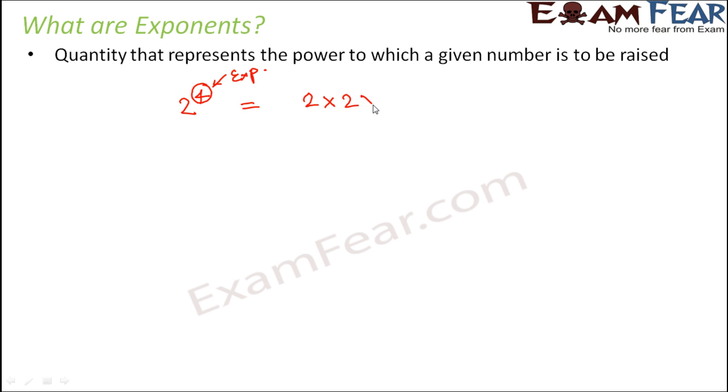How many times we are going to multiply 2 during multiplication. So it says 4 times. That means you take 4 2's and multiply them together. And here this value 2 is the base.